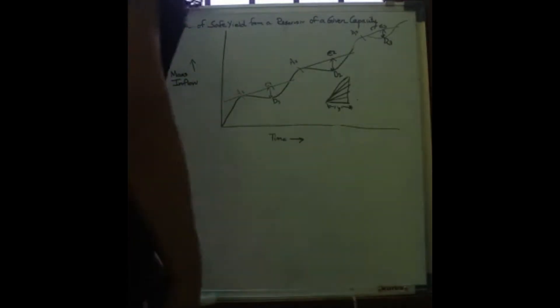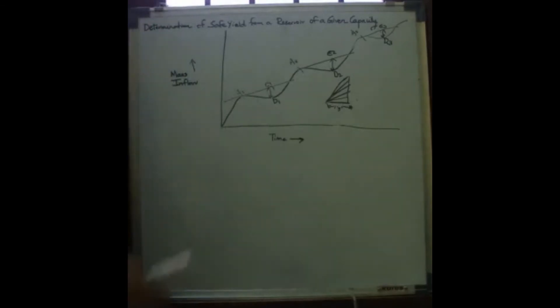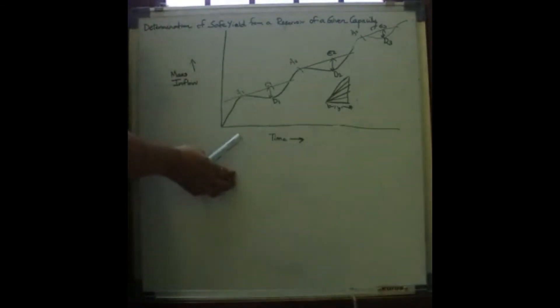This is how you determine safe yield from a reservoir of given capacity. The mass inflow curve is prepared from the inflow flood hydrograph.